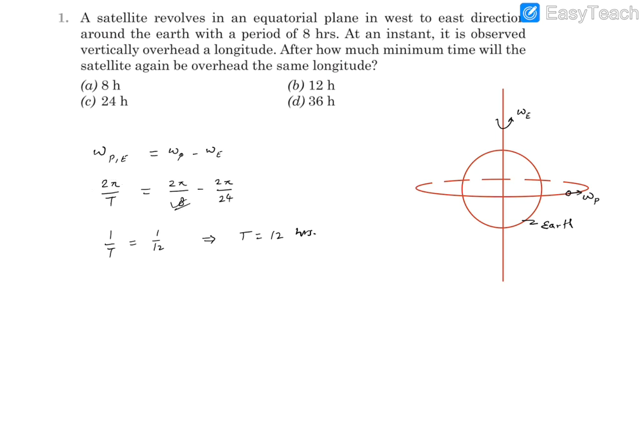This takes 8 hours, and this takes 24 hours. Now we can simplify this. 2 pi gets cancelled out, so 1 upon t comes out to be 1 by 12. So t is going to be 12 hours.